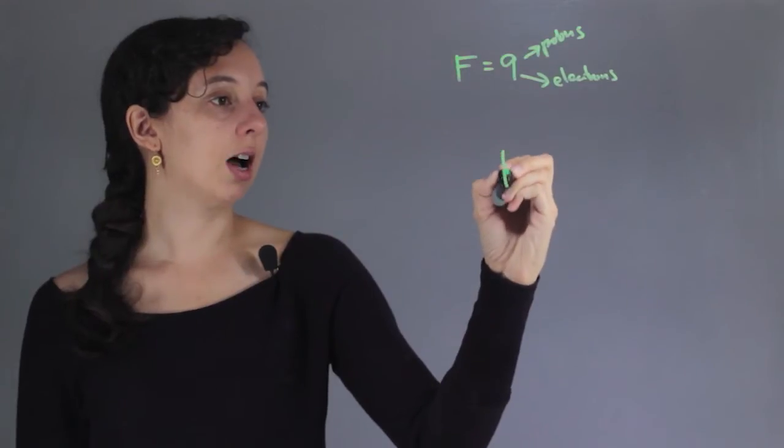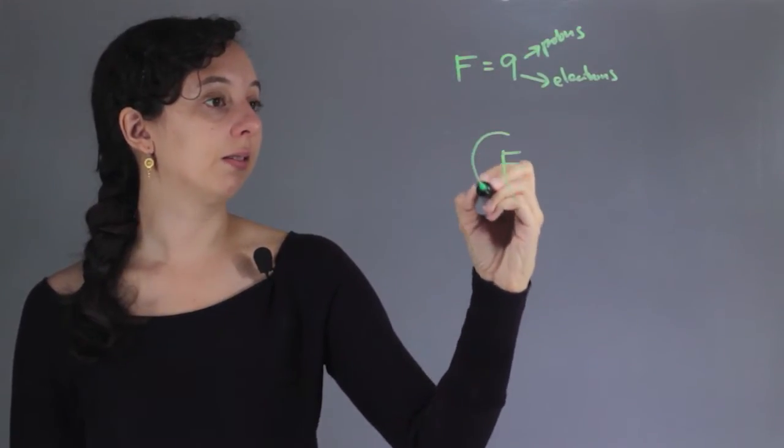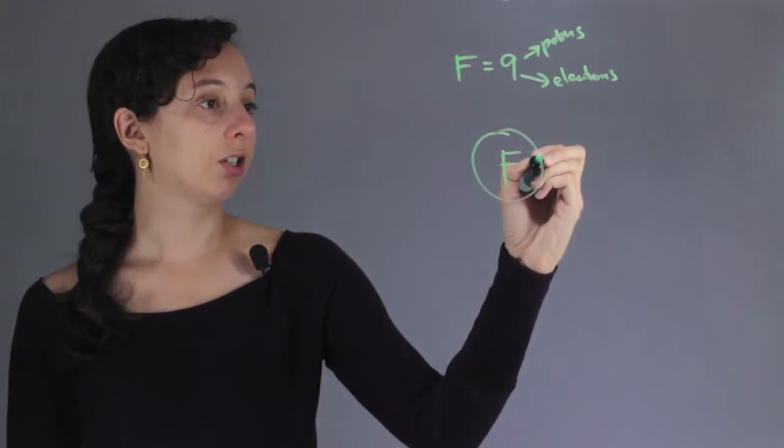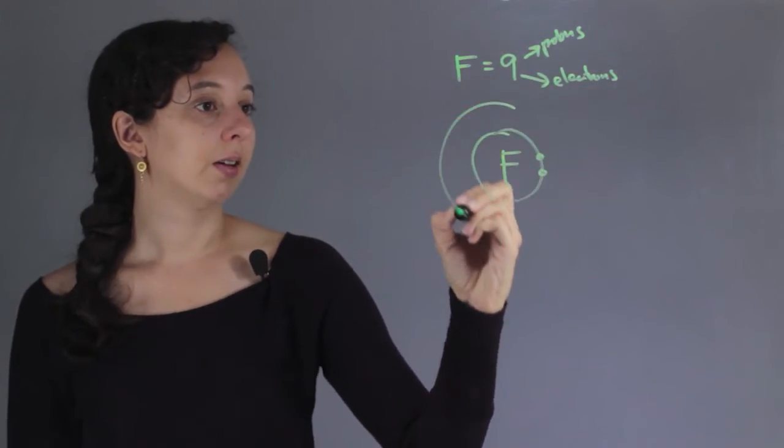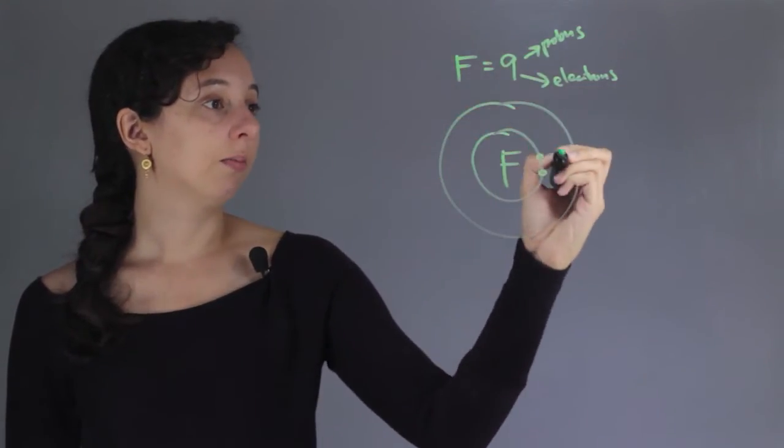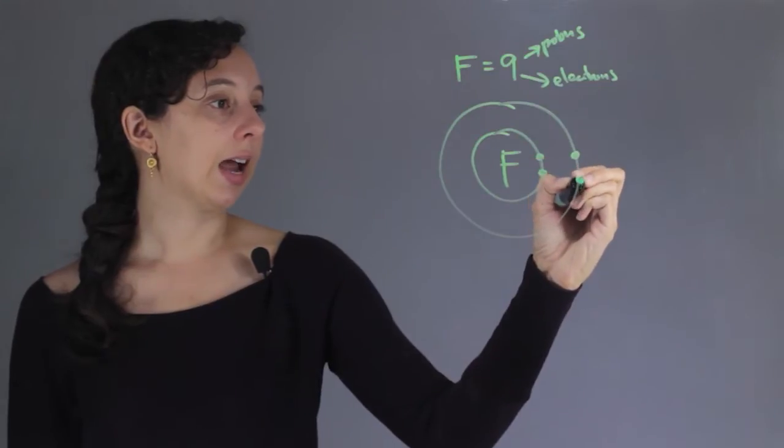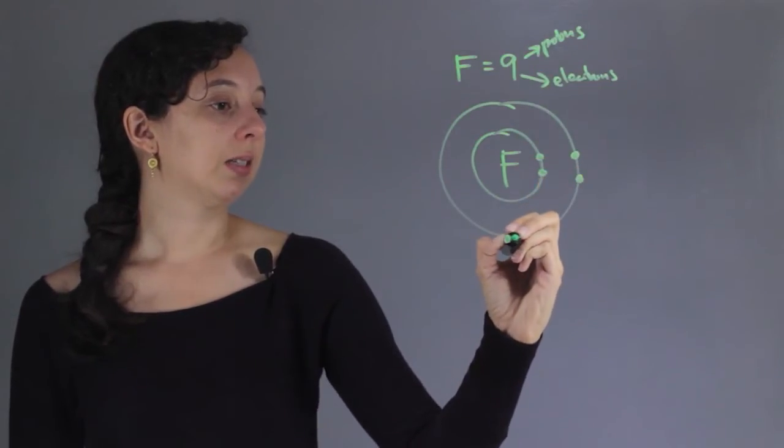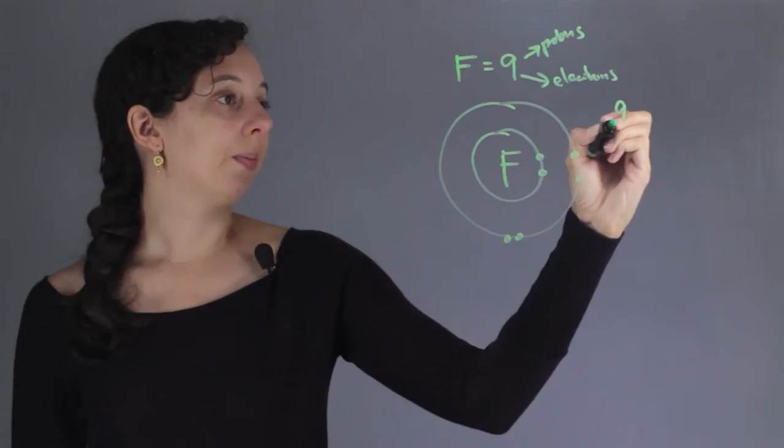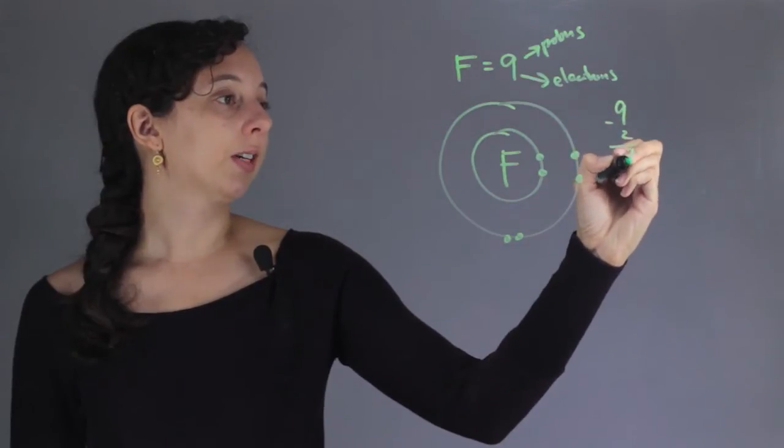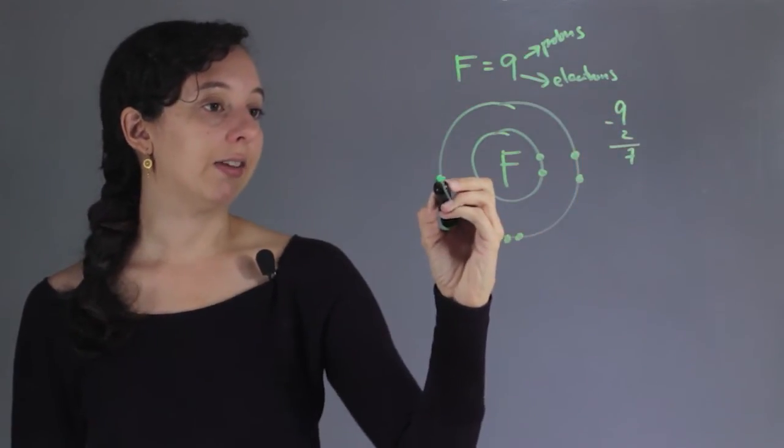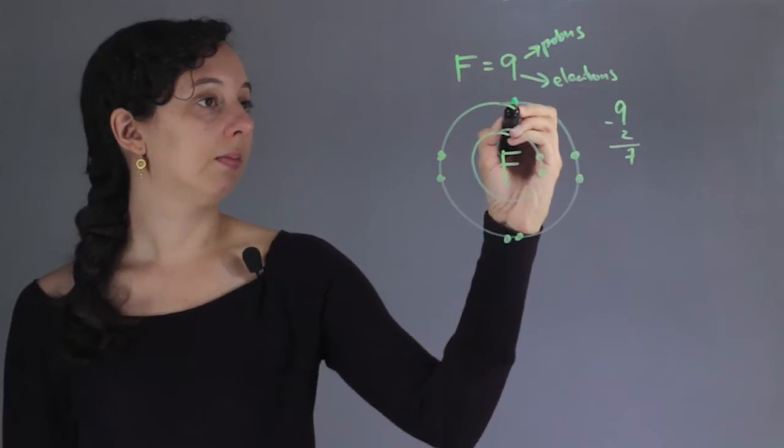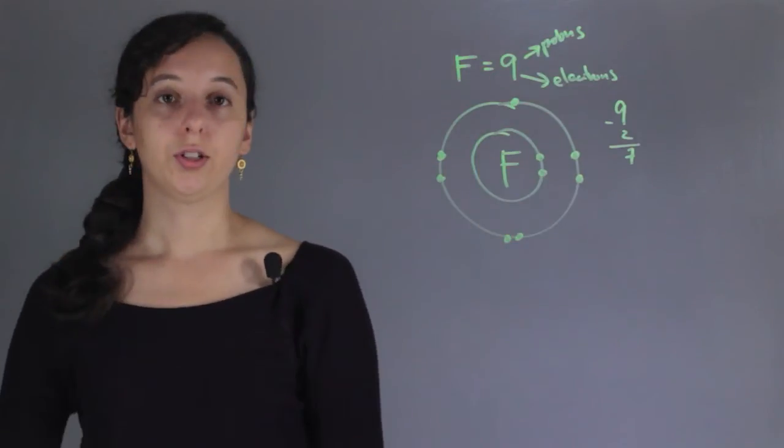If we draw the electron shells of fluorine, the first electron shell is always filled with 2 electrons, and the next one has room for 8. So fluorine has 9 total, which means 2 got used up in the first shell, so it's going to have 7 left, or 7 valence.